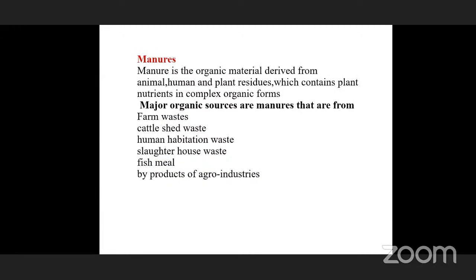Manures are organic materials derived from animals, humans, and plant residues. They contain plant nutrients in complex organic form. Unlike urea which supplies only nitrogen, manure supplies all essential elements: N, P, K, micronutrients, and all nutrients together. The major sources of manure are farm wastes, cattle shed waste, human habitation waste, slaughterhouse waste, fish meal, and byproducts of agro-industries.